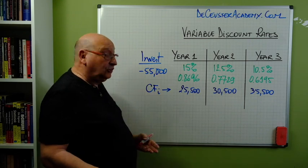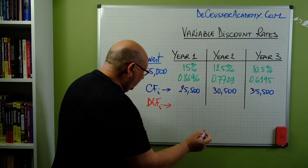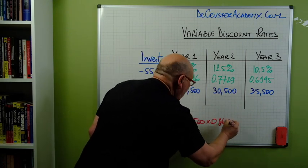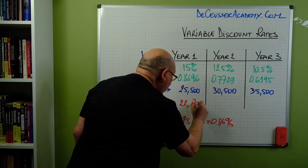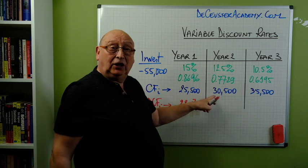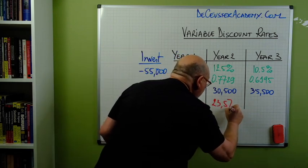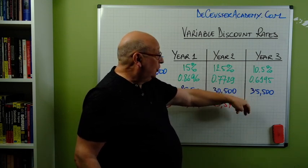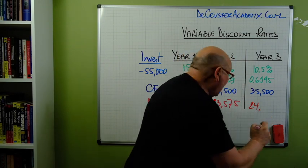What we have to do now is to calculate the discounted cash flows — DCF. For the first one, I multiply 25,500 by the discount factor 0.8696, which gives a discounted value of 22,174. We do the same thing for the second year: 30,500 multiplied by 0.7729 gives 22,575. And for the third cash flow, we multiply 35,500 by 0.6995, and here we get 24,832.